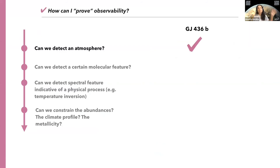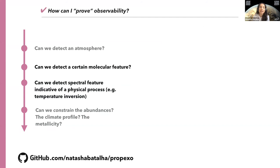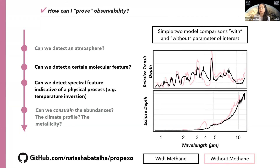With that, we fully answer this first question of whether or not the atmosphere can be detected. The next part of the tutorial is assessing how to detect a certain molecular feature — for example, if you want to hone in on being able to detect methane in some spectra amongst other absorbers. The simplest way to do this is to remove that singular opacity contribution from each model, leaving you with two simple models — one with and one without the parameter of interest — so you can reproduce the same statistical analysis as the flatline or blackbody rejection.